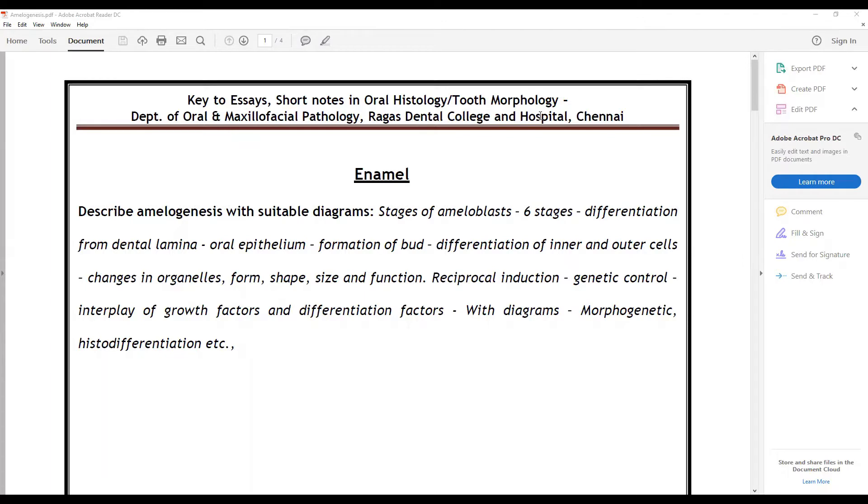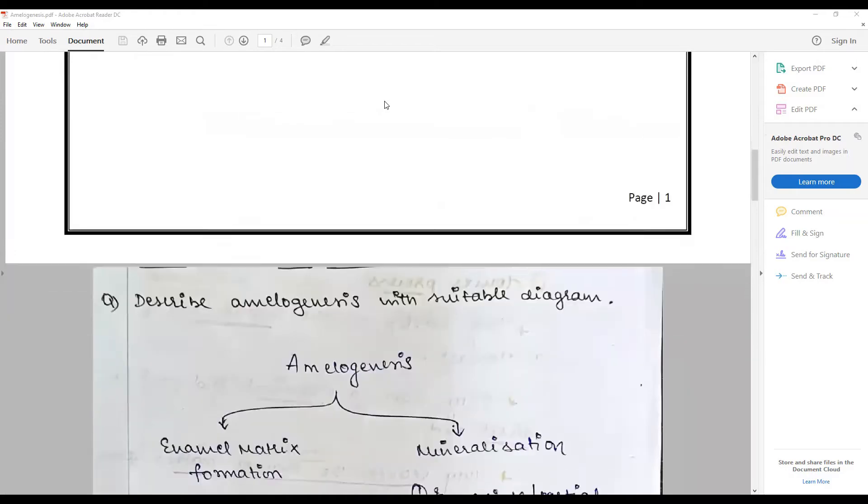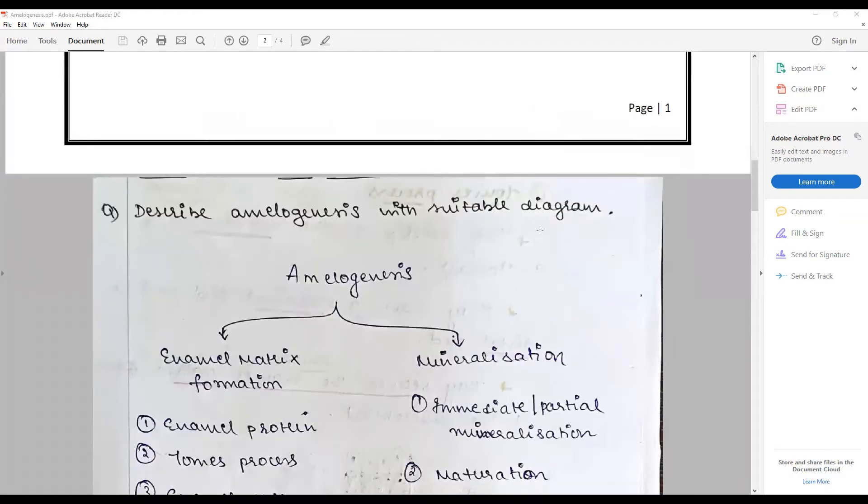Include all the diagrams, briefly recapitulating morphogenetic and histodifferentiation. Let us see how to answer in handwritten notes. Describe the process of amelogenesis with suitable diagram.